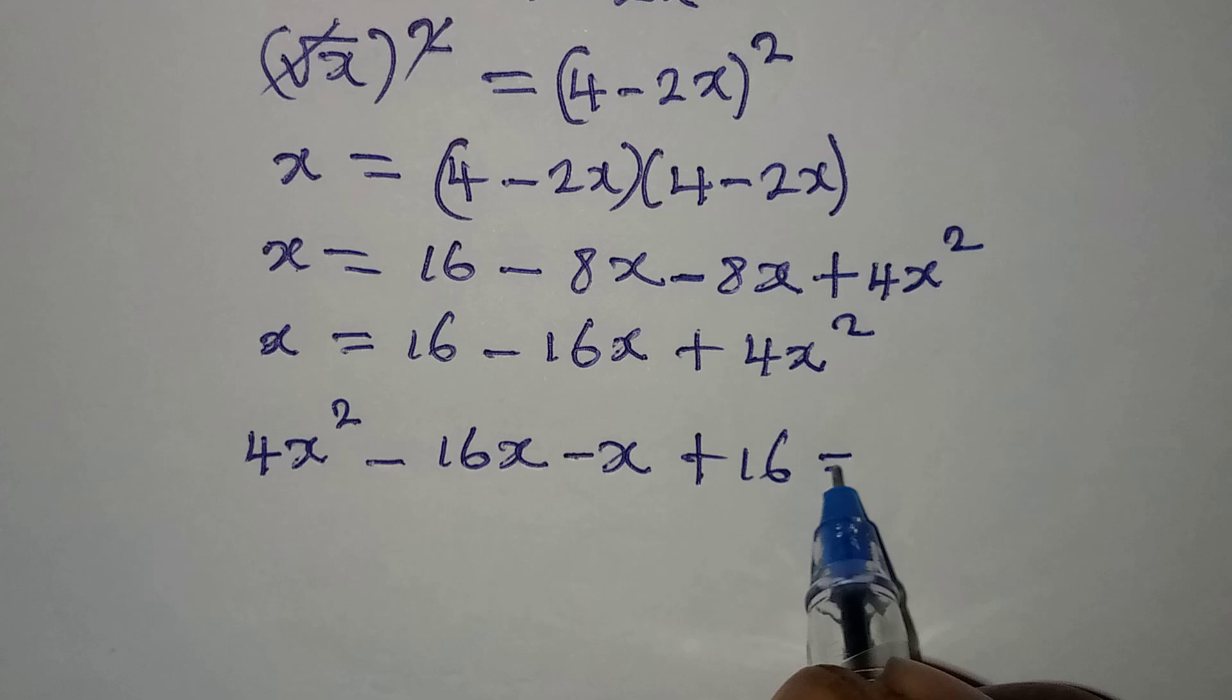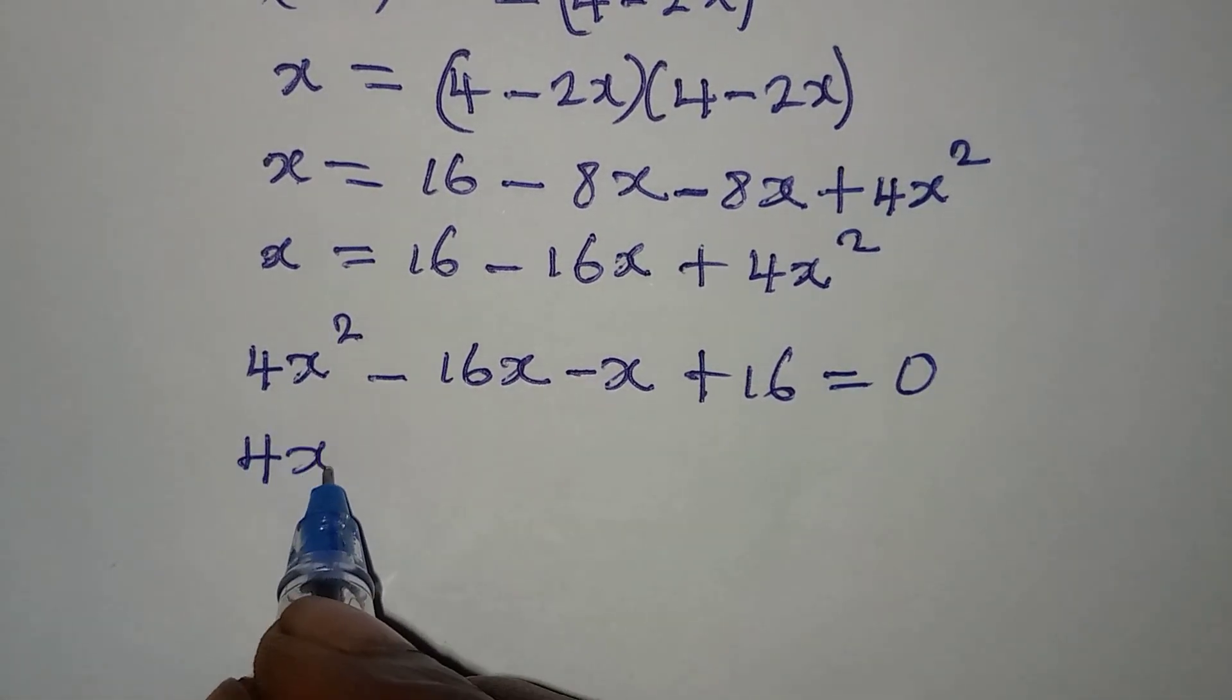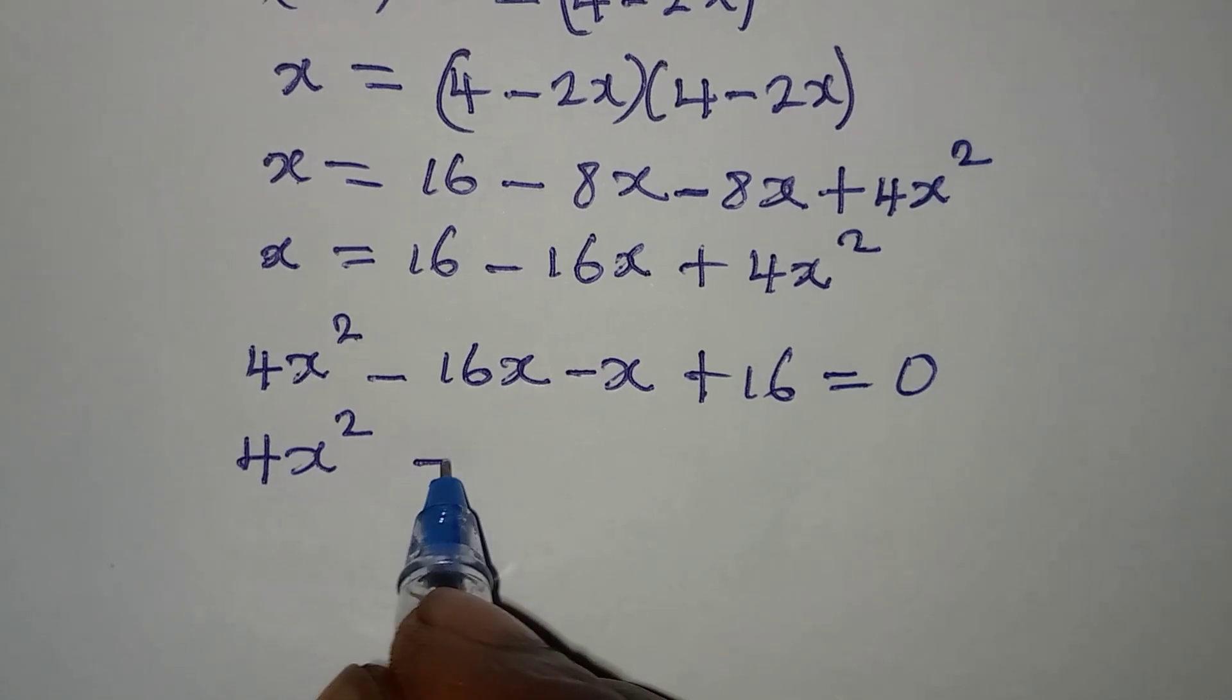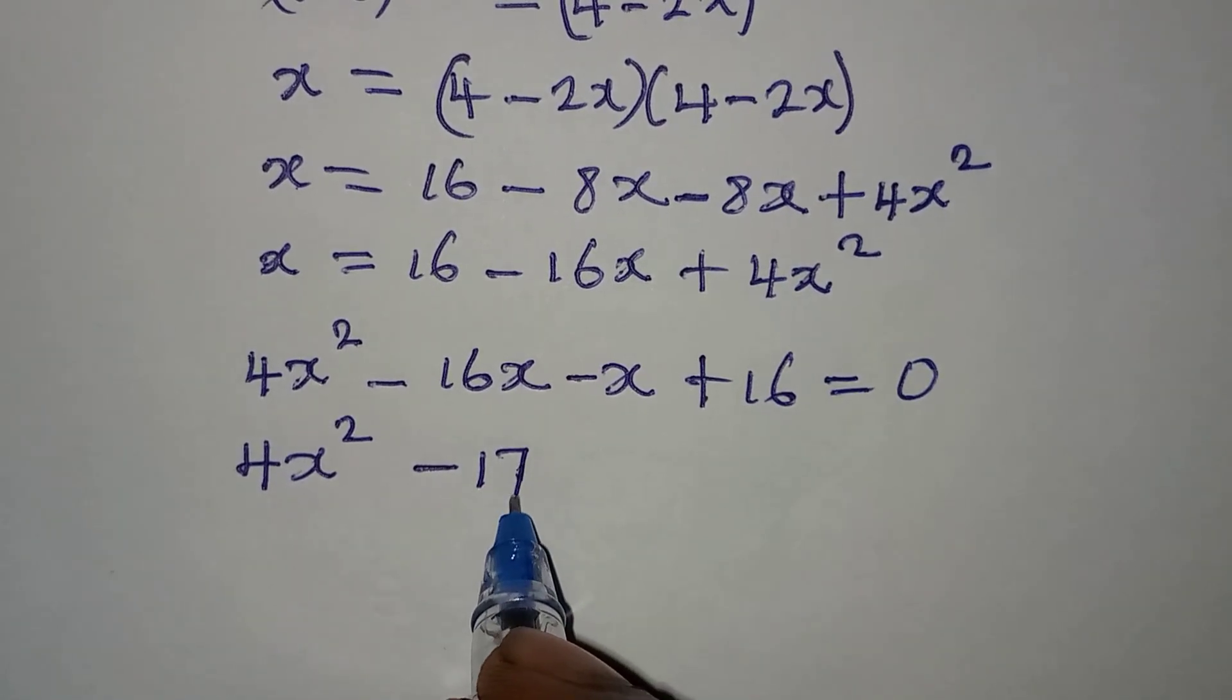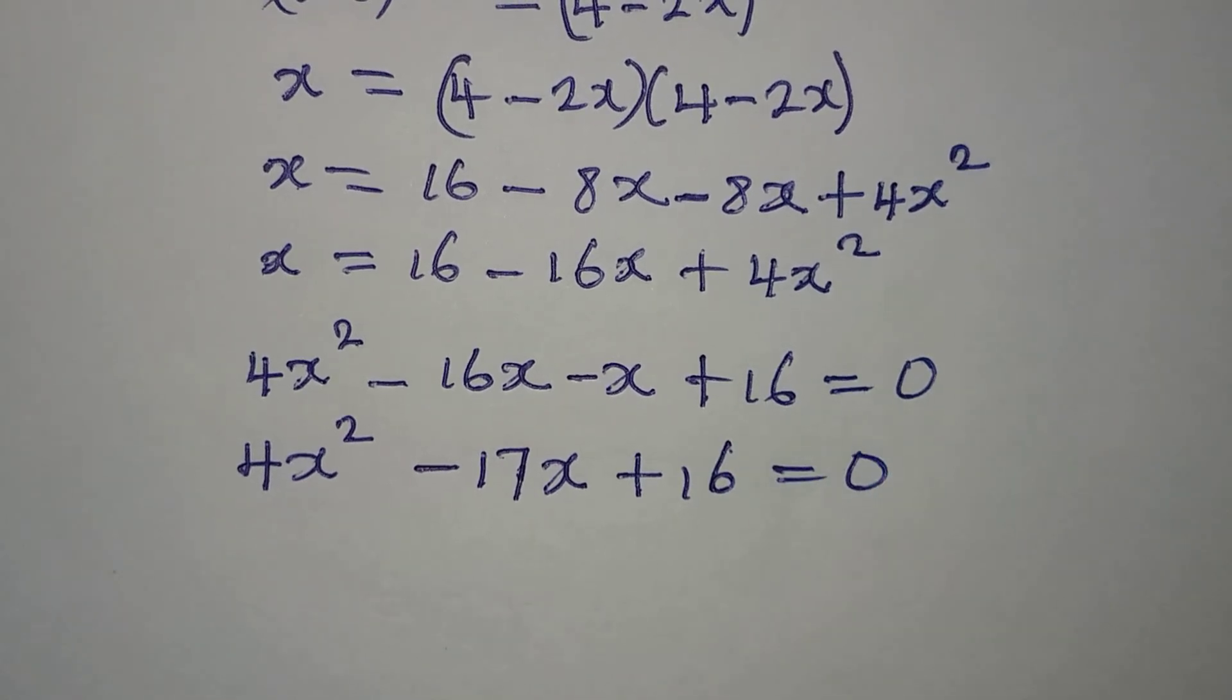Everything is equal to zero. This means that 4x² - 17x + 16 = 0.